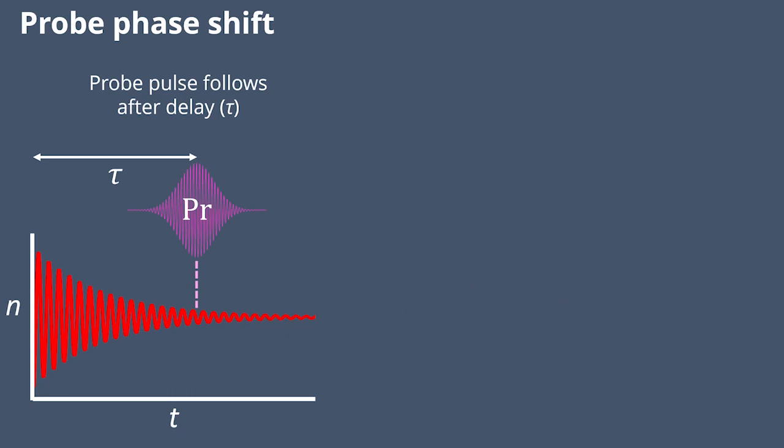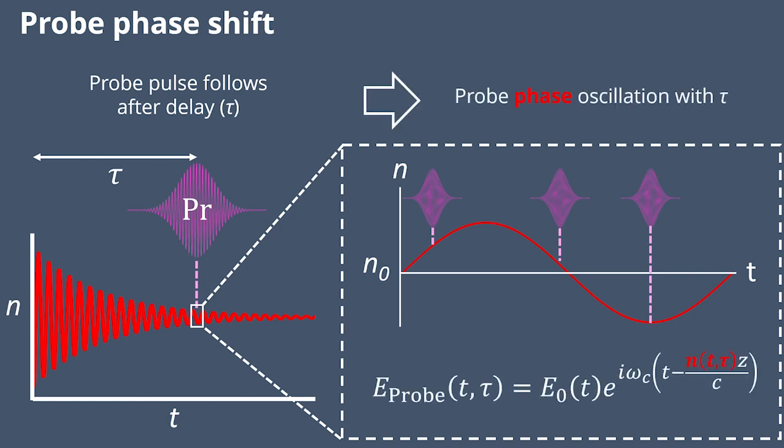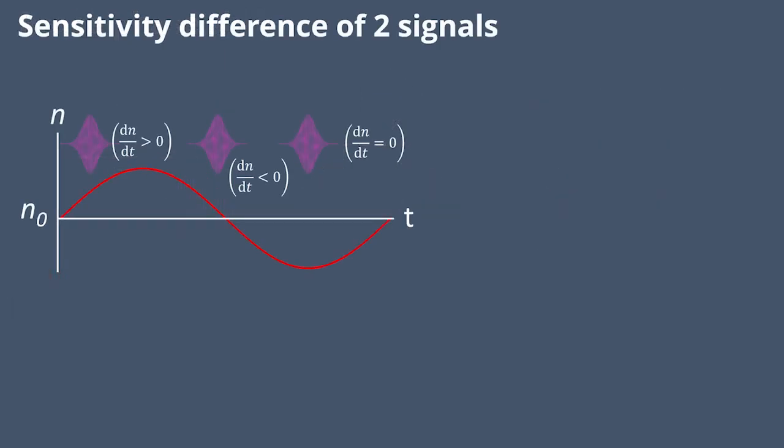A subsequent probe follows after some delay, tau, and it sees that oscillatory refractive index. Depending on the timing, it has a different effect on the probe's phase. In a simple electric field equation, there's a phase term related to the refractive index. Depending on the slope of the refractive index when the probe transmits through the sample, we have different effects.